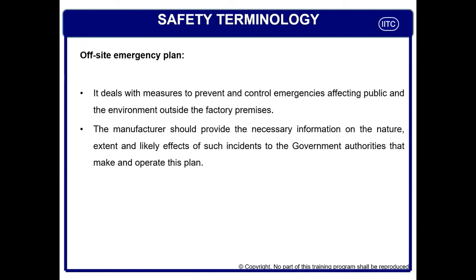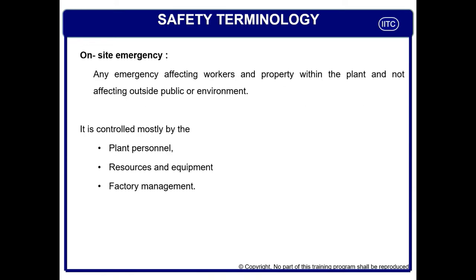Each manufacturer of hazardous chemicals or hazardous operations must give information to their district administration about the possible emergencies which can happen in their plant and which can affect nearby populations, nearby companies, and nearby societies — and if that event happens, how to minimize damage, control injuries, and control fatalities. This must all be defined in the off-site emergency plan. An on-site emergency plan is an emergency affecting workers and property within the plant and not affecting the public or environment outside. Normally it is controlled by plant personnel, plant resources, plant equipment, and factory management — requiring no support from district administration, police, or traffic police.